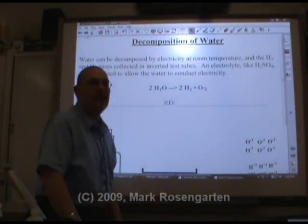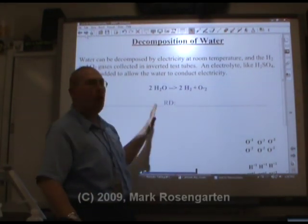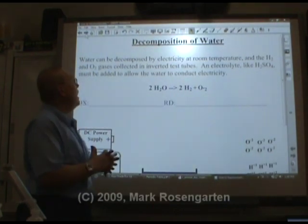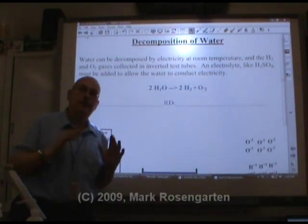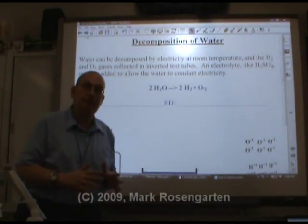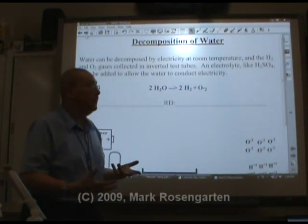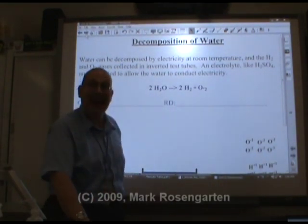One last example of electrolysis is the electrolysis of water. Water can be decomposed into hydrogen and oxygen. It's actually the first chemical decomposition that took place, and it's actually how they were able to figure out that the formula of water is H2O.